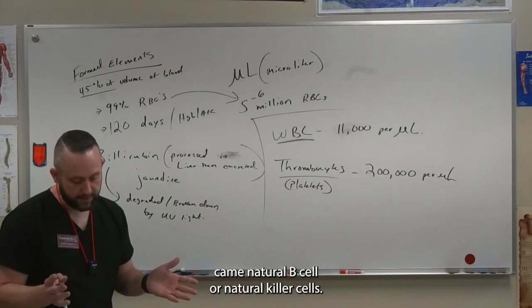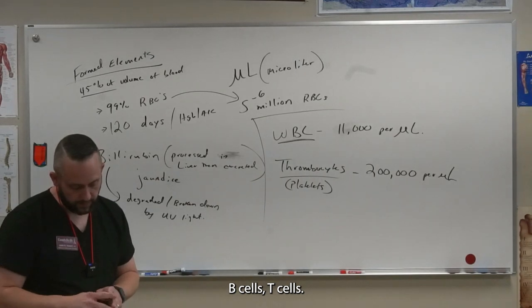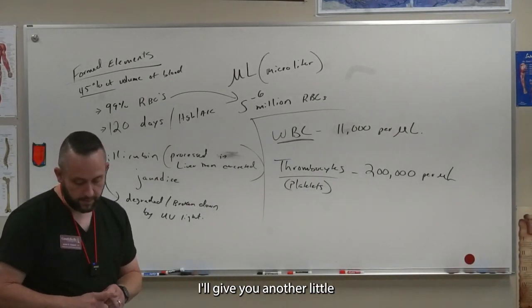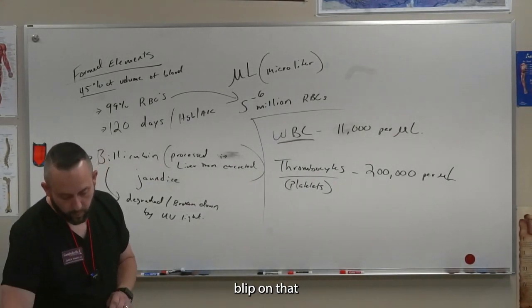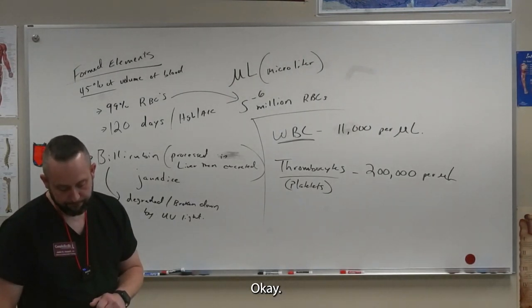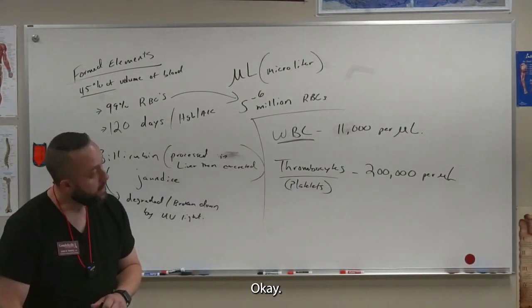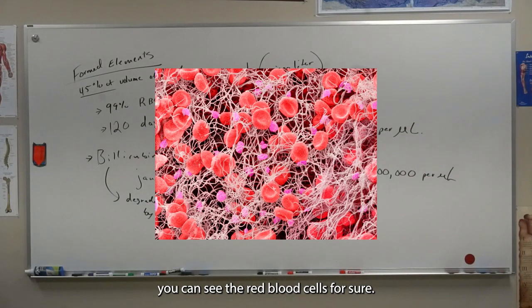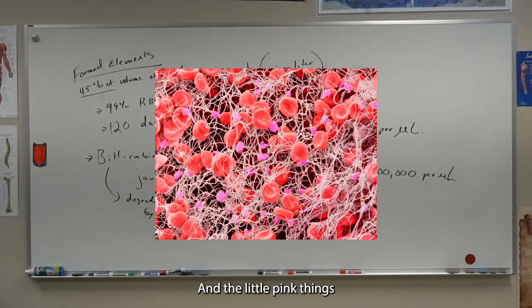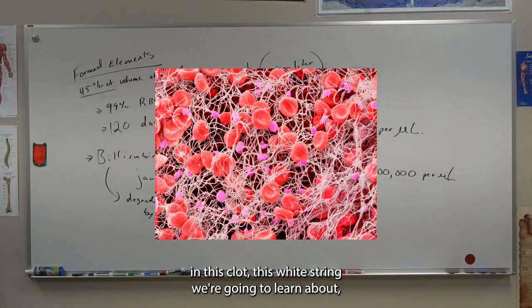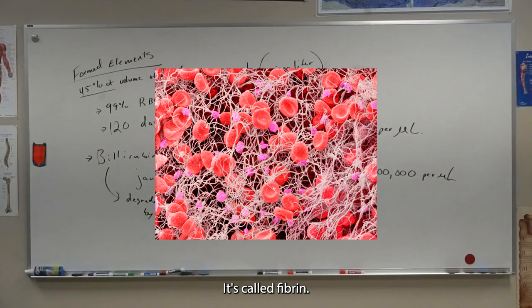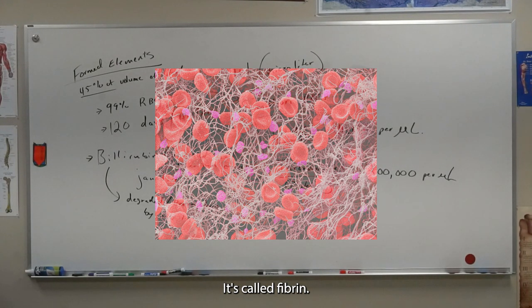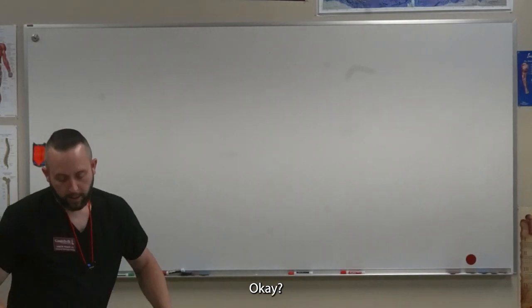Natural killer cells, B cells, T cells. I'll give you another little blip on that at the end of the chapter. Any questions about that? You can see the red blood cells for sure. The little pink things are platelets in this clot. This white string we're getting ready to learn about is called fibrin.